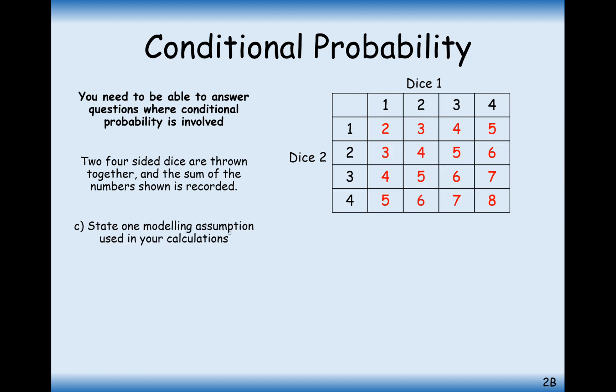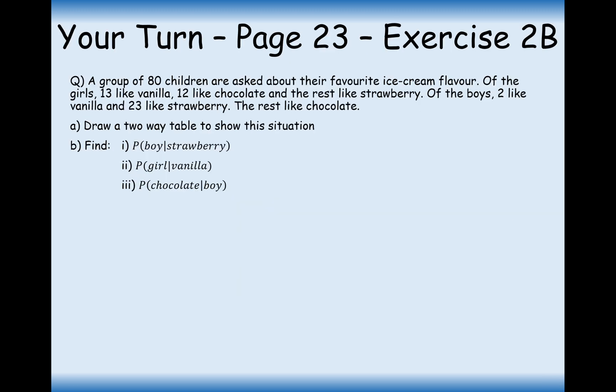State one modelling assumption used in your calculations: that both dice are unbiased, which means the outcomes are equally likely. Now it's your turn — pause the video and try this question out.